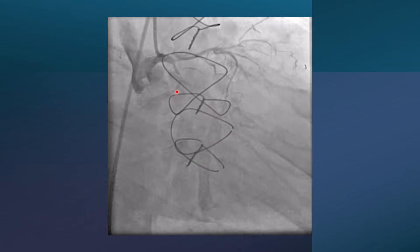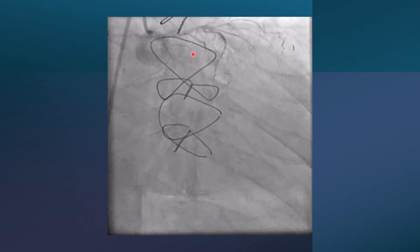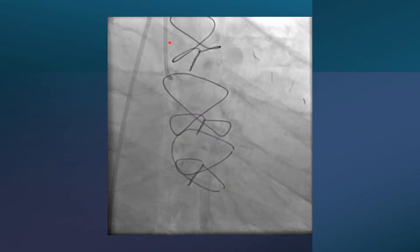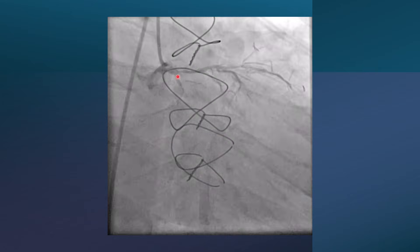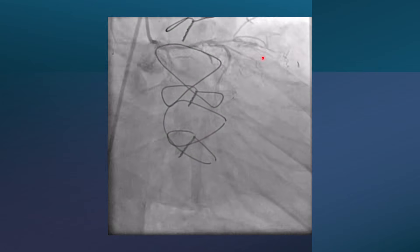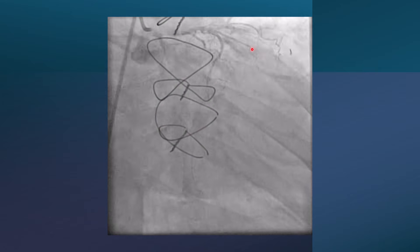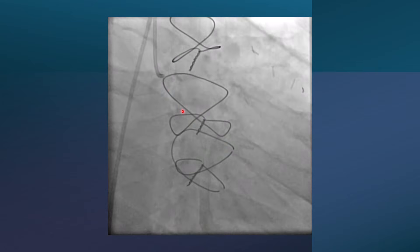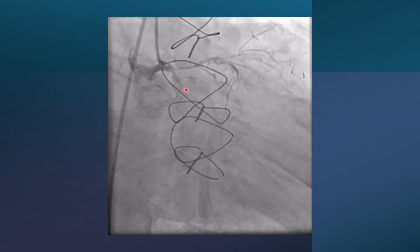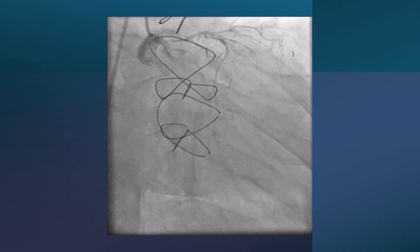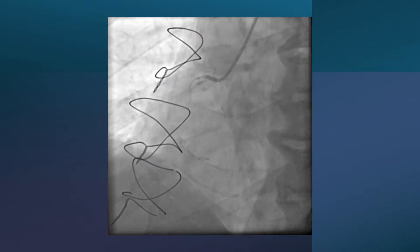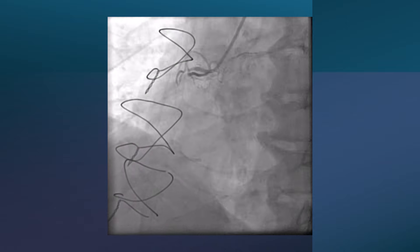This is the native coronary artery. We can see a small LAD with an osteo-critical lesion, then total in-stent restenosis, total left circumflex occlusion, and a total proximal RCA occlusion.